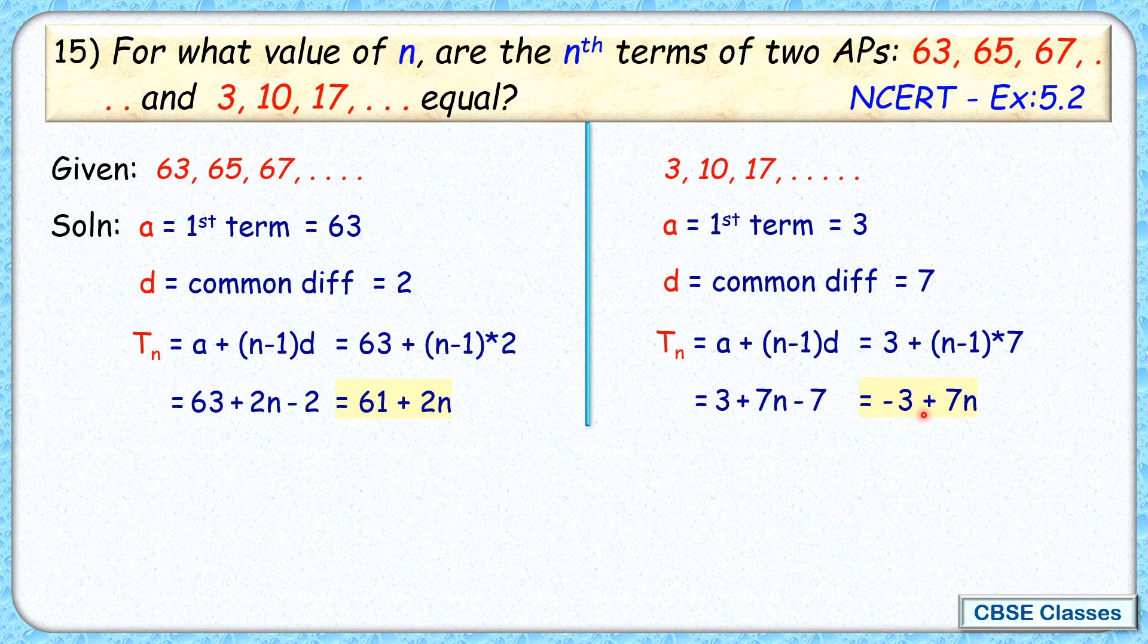Now the nth term is equal in both APs, so 61 + 2n equals -4 + 7n. Solving it by taking the term with n on one side, we get 61 + 4 = 7n - 2n, or 65 = 5n, and n = 13.